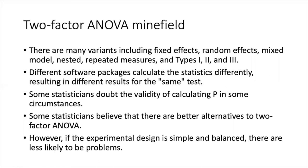One of the reasons why two-factor ANOVA is such a minefield is that there are so many different variants. You have kinds with fixed effects and random effects, mixed models, nested ANOVAs, repeated measures ANOVAs, and there are three different ways of calculating the ANOVAs. The end result is that depending on what kind of software package you use, you sometimes get different results for the very same test because of disagreements among statisticians about how the statistics should be calculated.